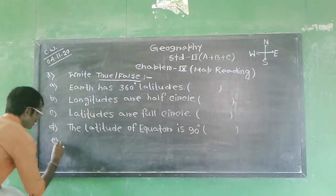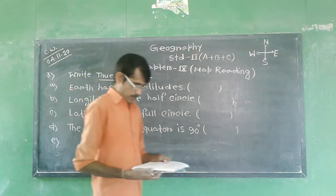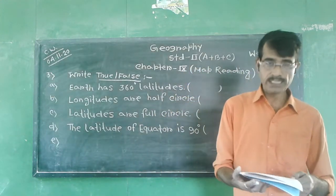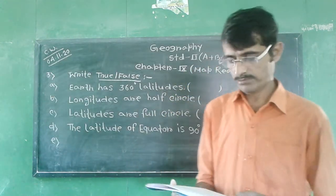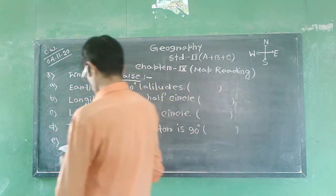And last one, E. Prime meridian is 180 degree longitude. It is also a false statement.